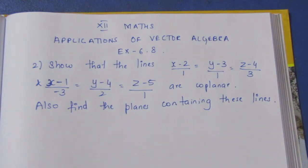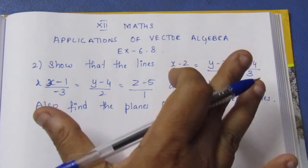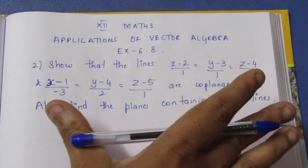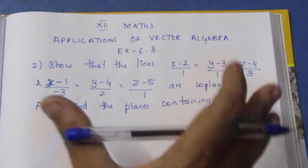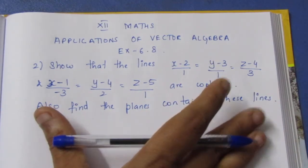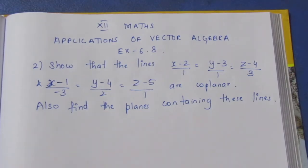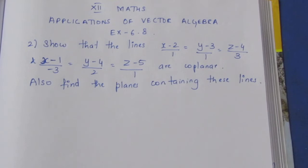To show co-planar and find the plane equation — this is one condition. The plane equations are the same. Now, we have to do this using the Cartesian formula. We can apply the Cartesian formula to this sum.